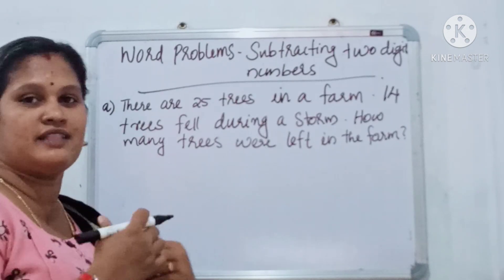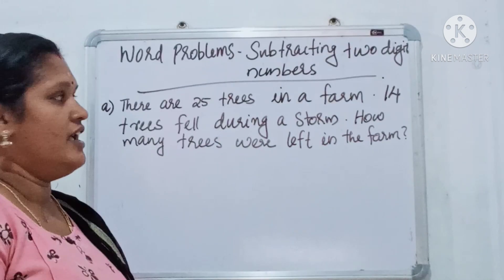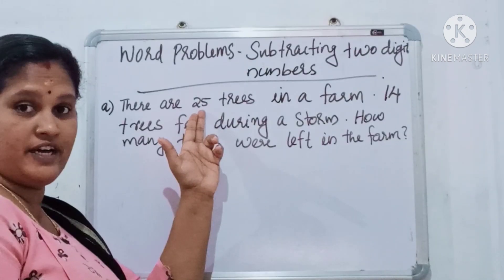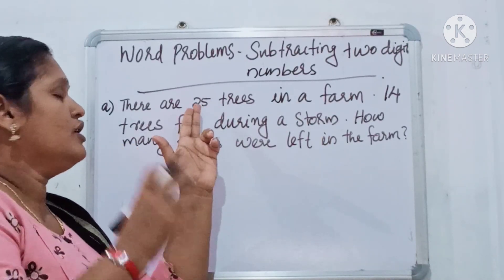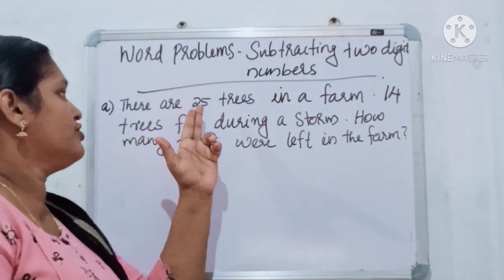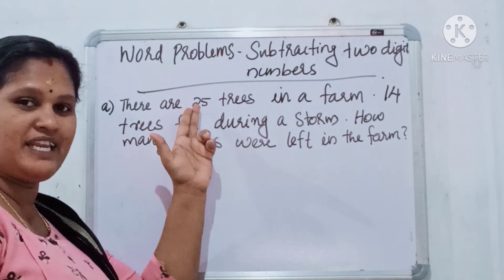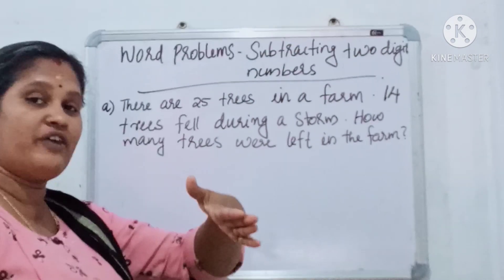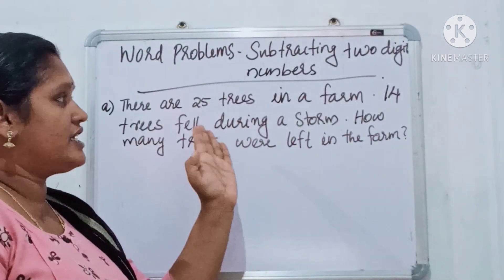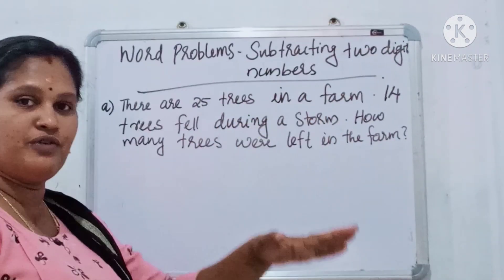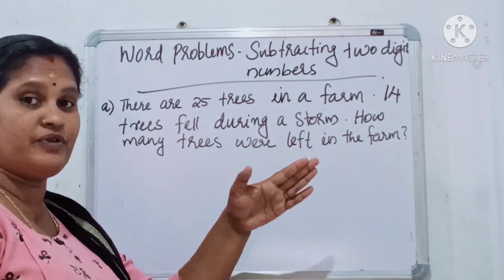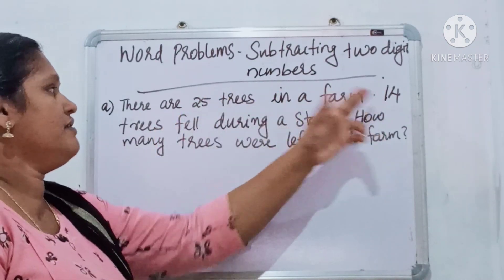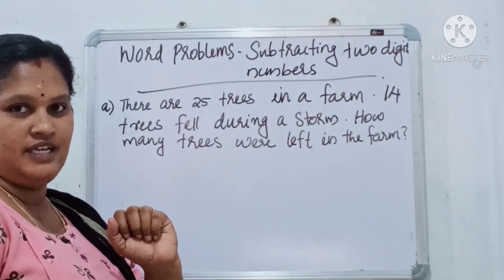How do we find how many trees were left in the farm? There are 25 trees in the farm, and 14 trees fell. We can subtract 14 from 25. Okay?